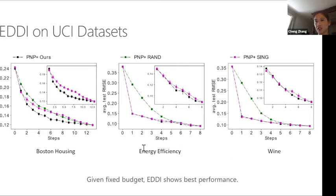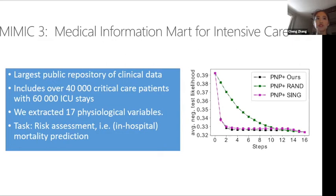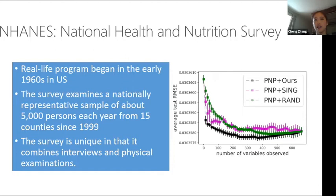We also tested on MIMIC3 — the largest publicly available medical dataset from two real-world hospitals — for the task of patient risk assessment (predicting mortality). With just three physiological variables, we can predict as well as using all 17 variables. On the US National Health and Nutrition Survey income data with ~700 questions, we achieve best performance with around 200 questions instead of all 700.